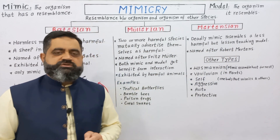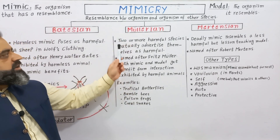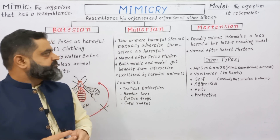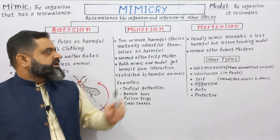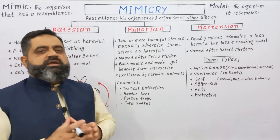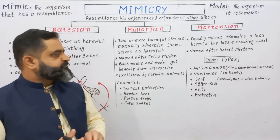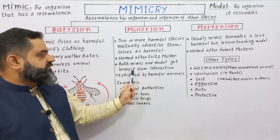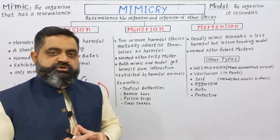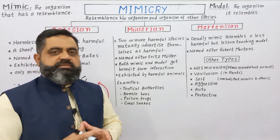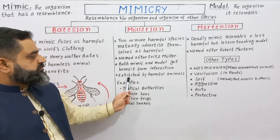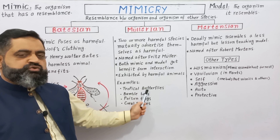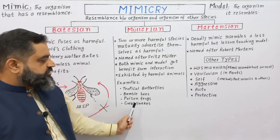The second type of mimicry is Mullerian Mimicry. In this mimicry, two or more harmful species belonging to two different categories mutually advertise themselves as harmful, becoming more powerfully harmful and able to survive attacks of predators. This mimicry is named after Fritz Muller. In this mimicry, both the mimic and model get benefit from this interaction, and this interaction is usually in the form of mutualism. Examples of Mullerian Mimicry include tropical butterflies, bumblebees, poison frogs, and coral snakes.